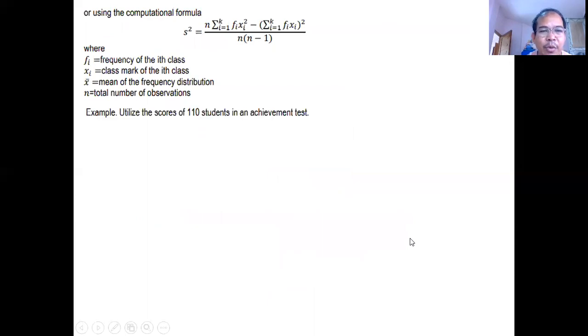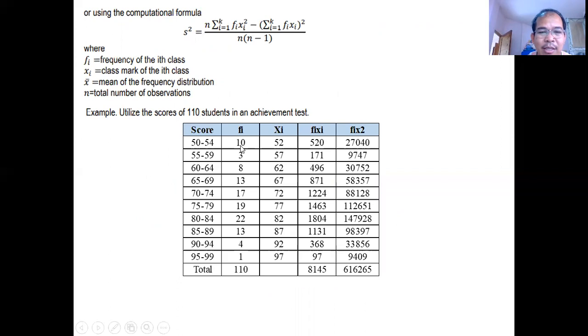Let's have an example. Utilize the scores of 110 students in an achievement test. So yung row scores ng 110 students already presented in frequency distribution. How many students get scores from 50 to 54? There are 10 students. How many students get scores from 55 to 59? There are 3 students. The total of this is equal to 110. Then we will also need to know the values of the class mark. How to solve class mark. Lower limit plus upper limit divided by 2 is 52. 55 plus 59 divided by 2 is 57. 60 plus 64 divided by 2 is 62. Then just continue the process.